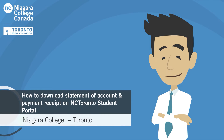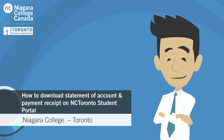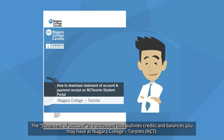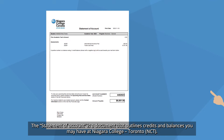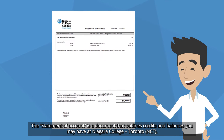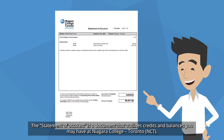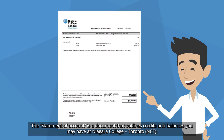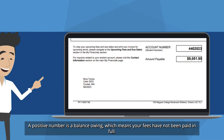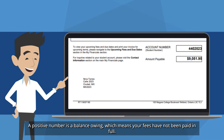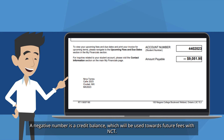How to download Statement of Account and Payment Receipt on NC Toronto Student Portal. The Statement of Account is a document that outlines credits and balances you may have at Niagara College Toronto. A positive number is a balance owing, which means your fees have not been paid in full. A negative number is a credit balance, which will be used towards future fees with NCT.